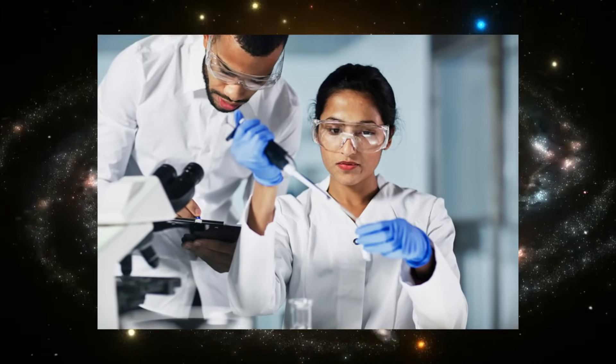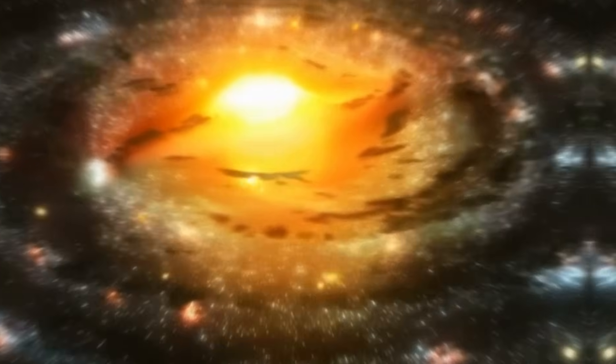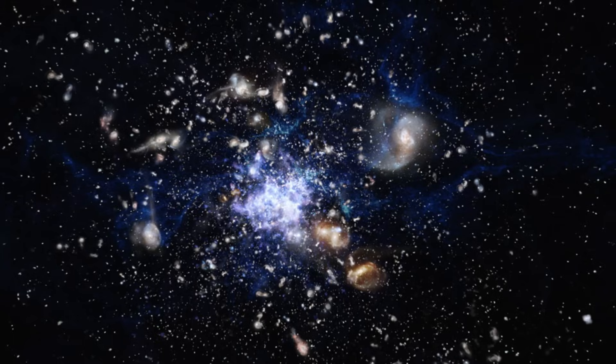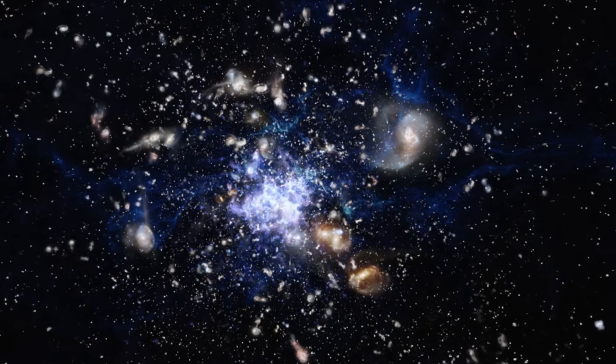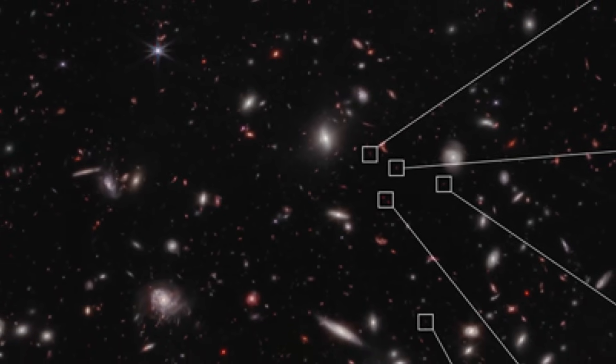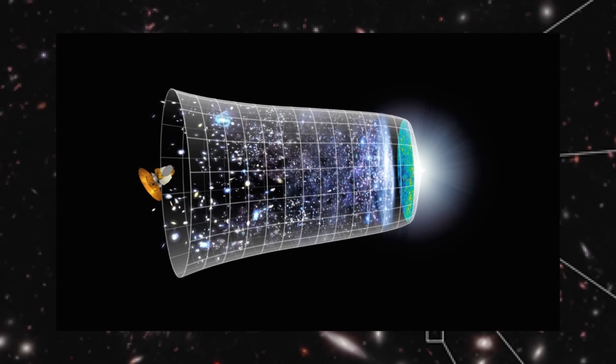While scientists are uncertain when the initial clusters of stars began to merge into the early galaxies we observe today, cosmologists previously estimated that this process started gradually, taking shape within the first few hundred million years after the Big Bang.